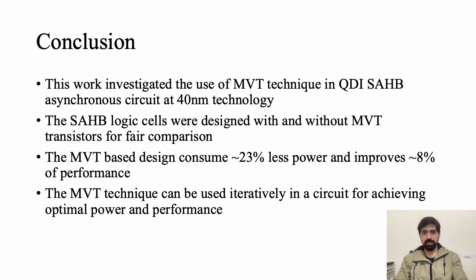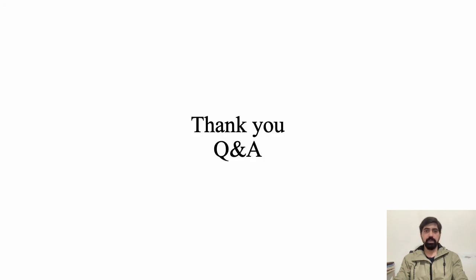In conclusion, we investigated the effects of using MVT in an asynchronous SAHB buffer cell with and without MVT transistors implemented at 40nm CMOS technology. Compared with previous work on SAHB and PCHB implementations at 65nm without MVT, our results show nearly 23% savings in power consumption and nearly 8% savings in propagation delay. Thank you all for listening — please ask if you have any questions.